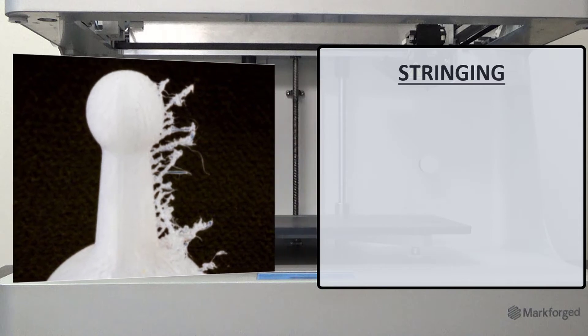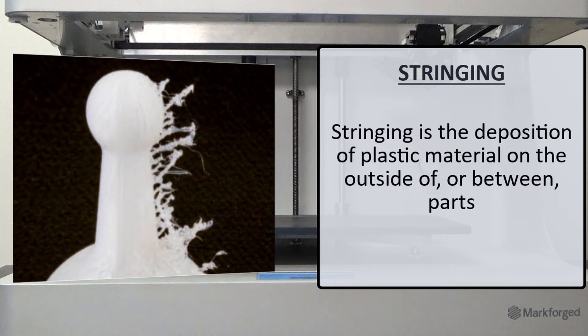Let's talk about plastic stringing. Stringing is the deposition of plastic material on the outside of or between parts in the build, like the example shown. Stringing occurs when plastic is expelled or leaks from the nozzle unintentionally. It can also occur when plastic sits in the heated nozzle for an extended period of time, or when part of a new layer fails to completely adhere to the layer before.